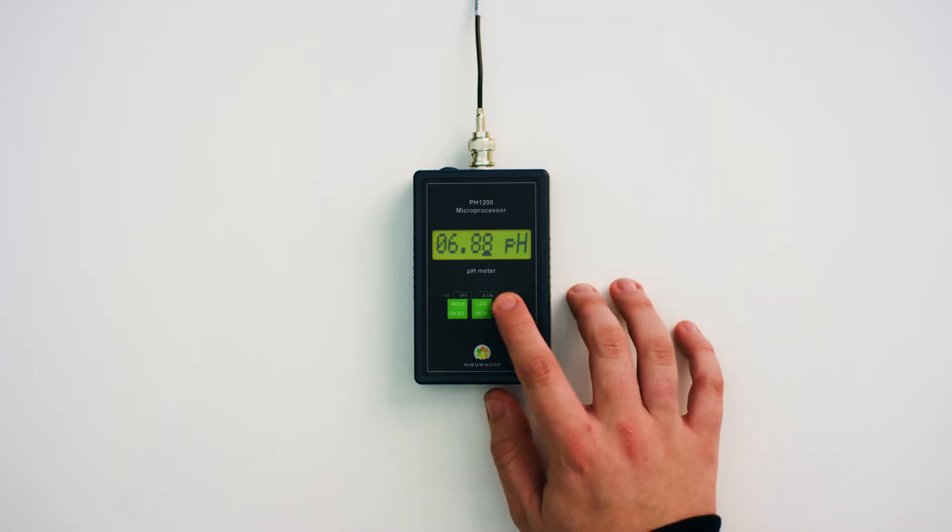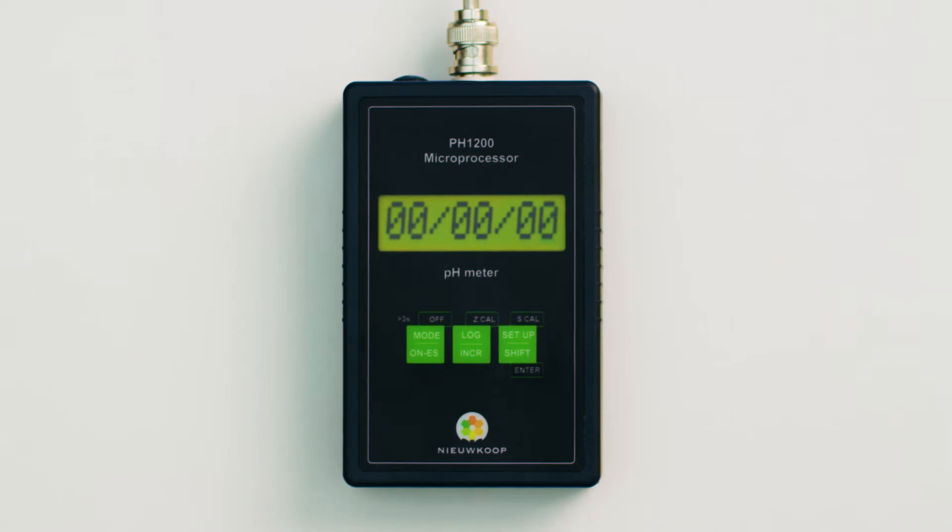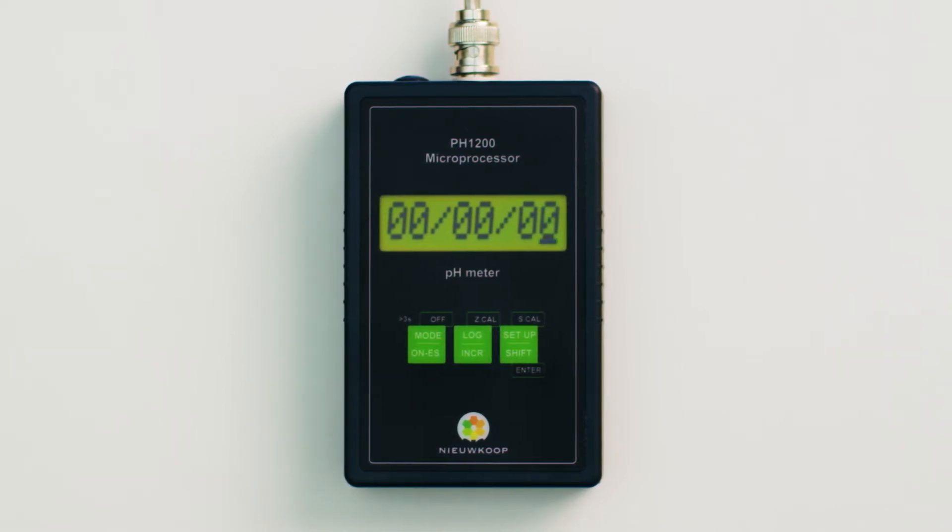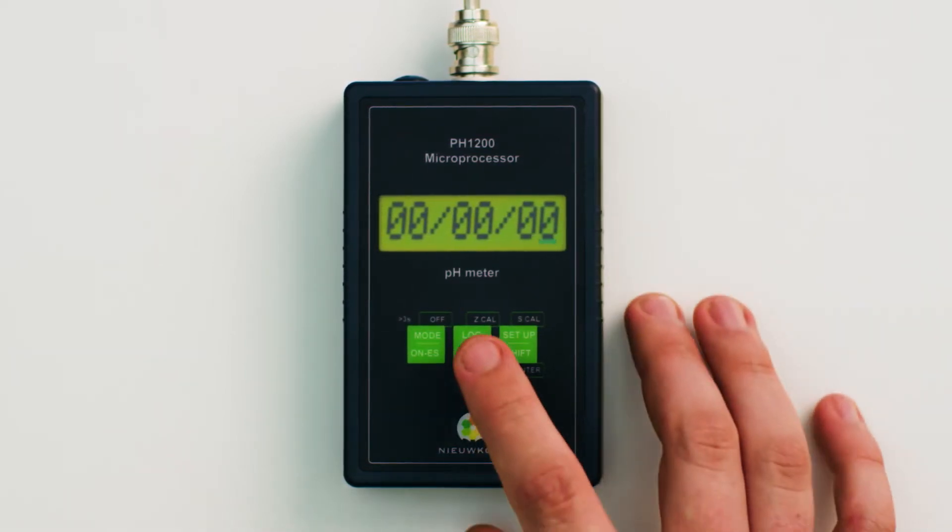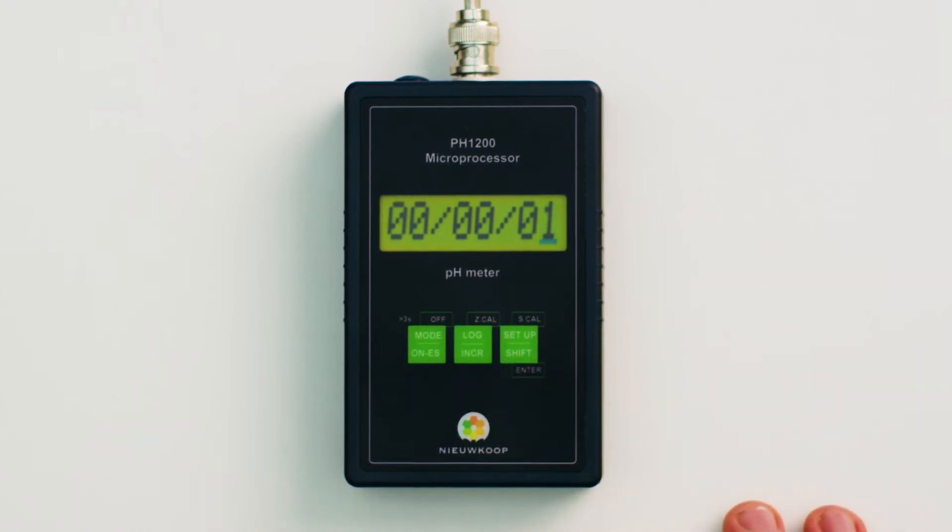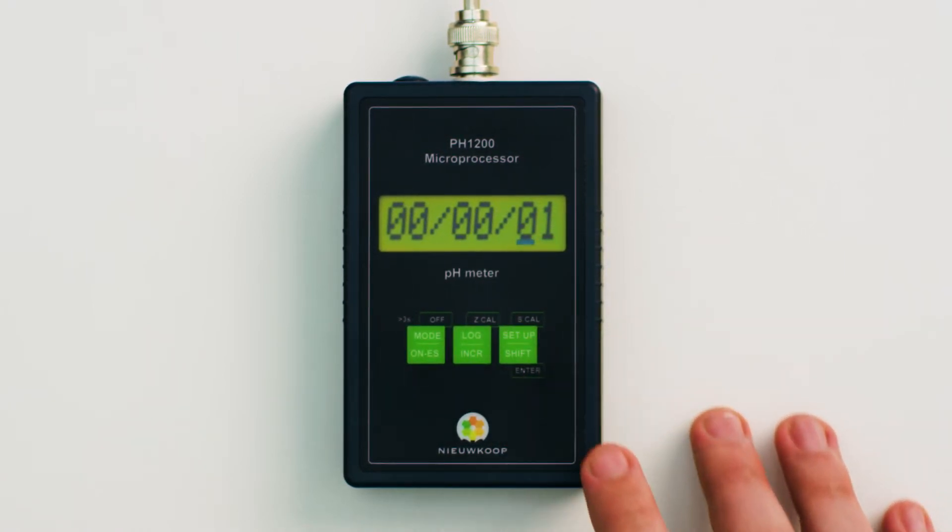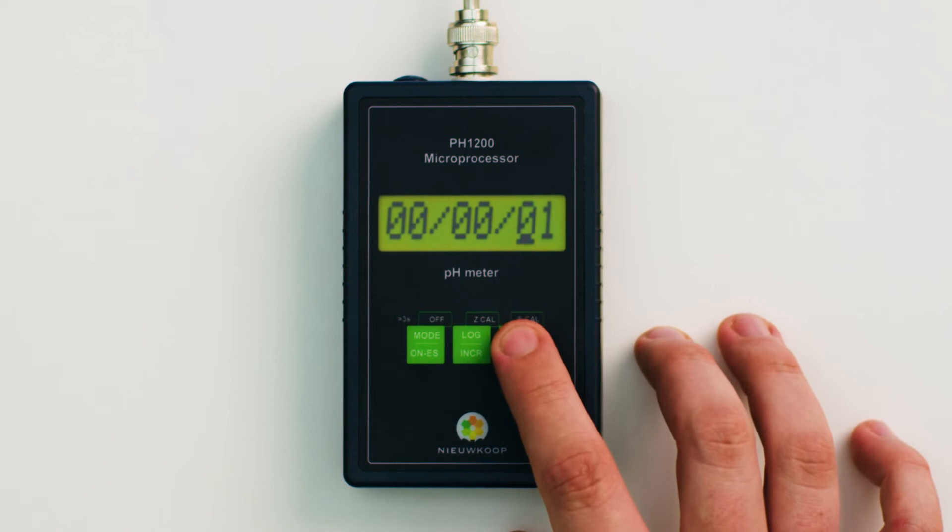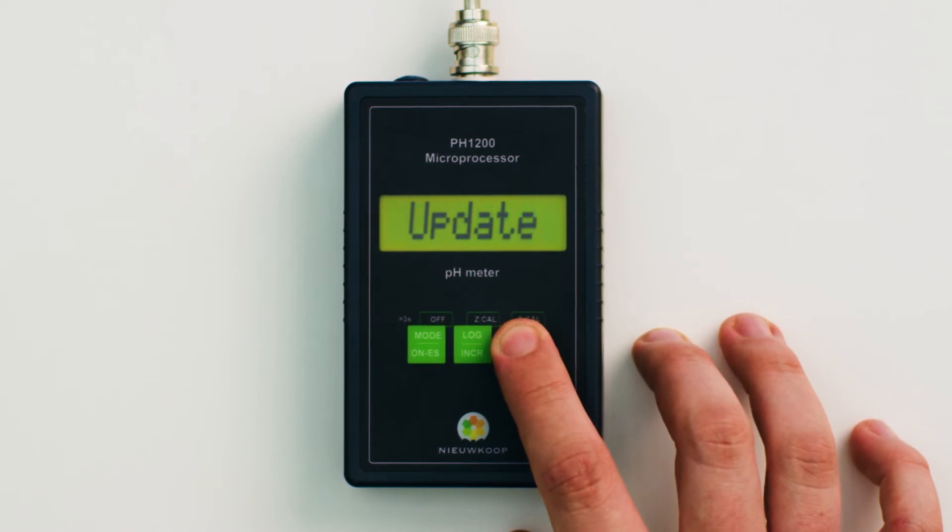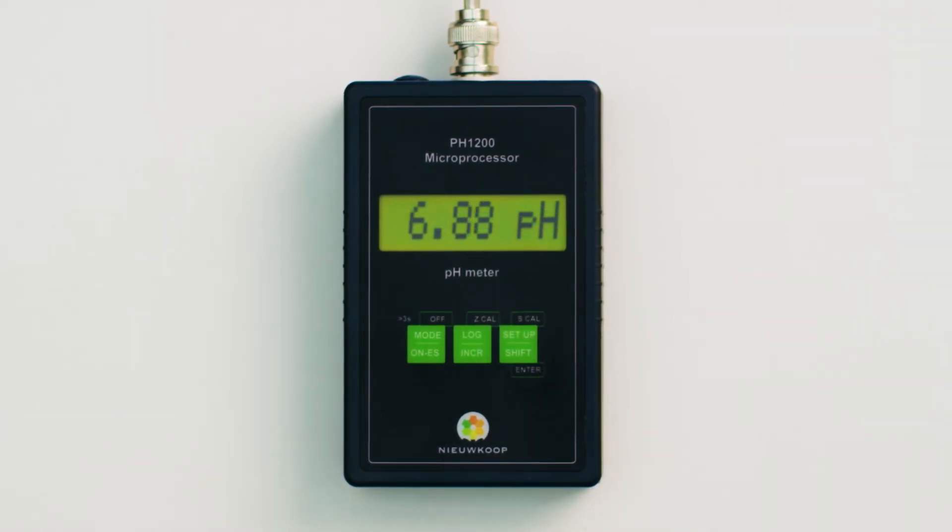Press and hold the setup button until last cal appears followed by a date. Here you enter the date of the day on which the calibration is being done. With the INCR key you change the number and with the setup key you choose the position. After setting press and hold the setup button and update will appear on the display. The pH 6.86 is now calibrated.